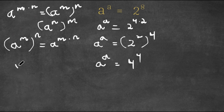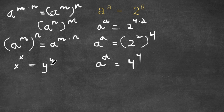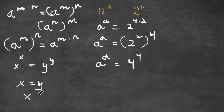Now if we have something in the form x to the power of x equals y to the power of y, this means x equals y, as long as x is greater than or equal to 1. So in this case, a is equal to 4.